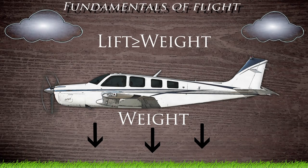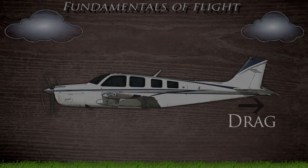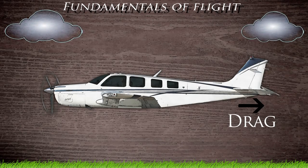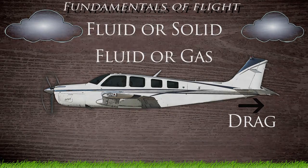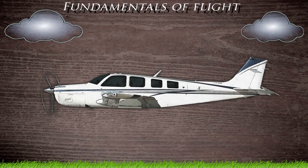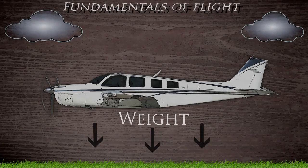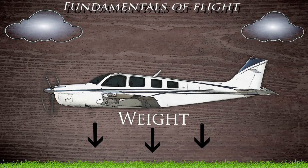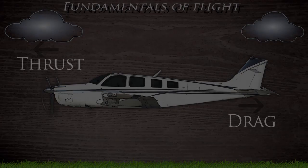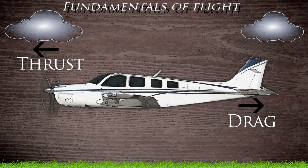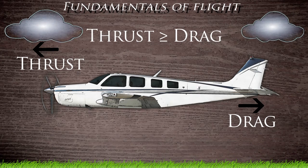Now we have to take a closer look at drag. Drag in a generic sense is a term for friction caused by the interaction of a fluid or solid on a fluid or gas. In this case it is the aircraft — a solid — flying through the air — a fluid. Earlier we mentioned that in order for an aircraft to fly, lift must be equal to or exceed gross weight. The same principles apply with thrust and drag: thrust must be equal to or exceed drag in order to either achieve or maintain lift.